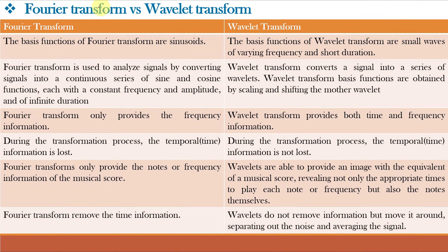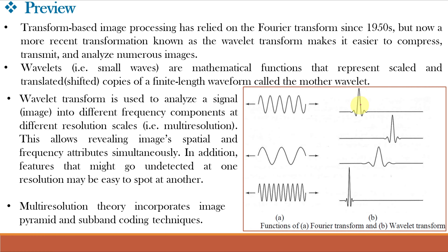Let us understand the differences between Fourier Transform and Wavelet Transform. For Fourier Transform, the basis functions are sinusoids of varying frequencies. Whereas, for Wavelet Transform, the basis functions are small waves of varying frequencies and short duration. Fourier Transform is used to analyze signals by converting them into a continuous series of sine and cosine functions, each with a constant frequency and amplitude and of infinite duration. Whereas, Wavelet Transform converts a signal into a series of Wavelets, and the basis functions are obtained by scaling and shifting the mother Wavelet.